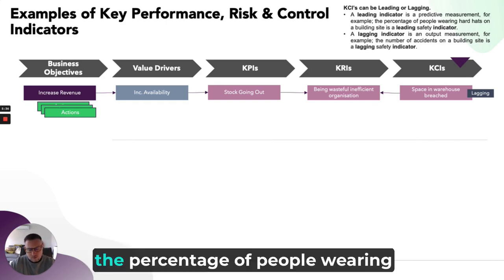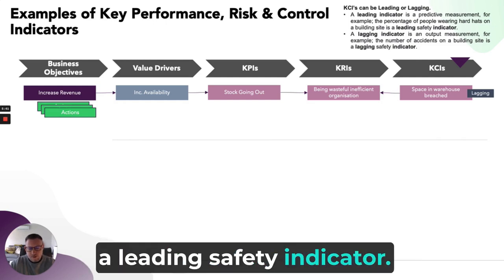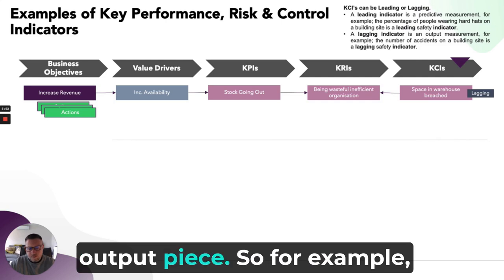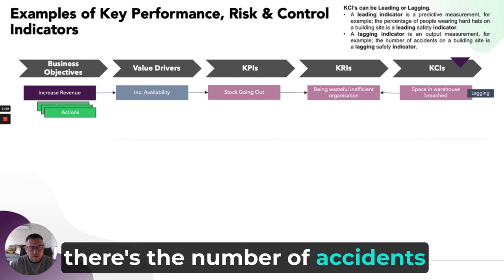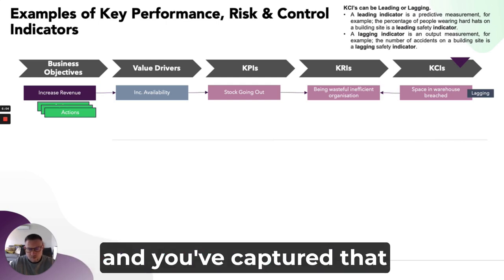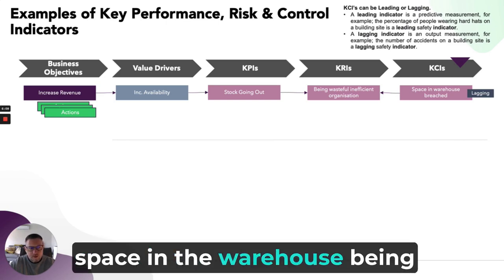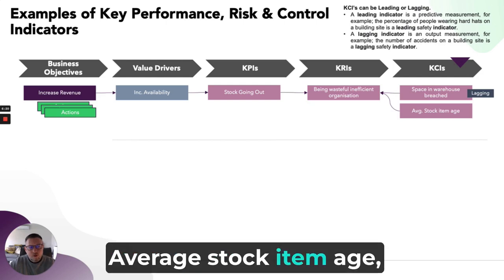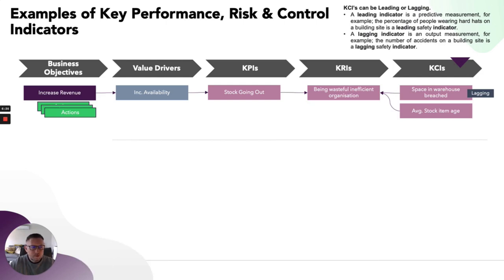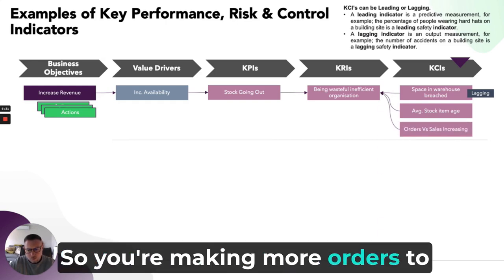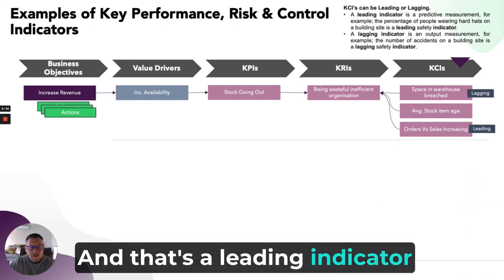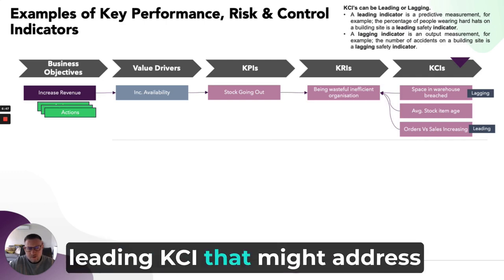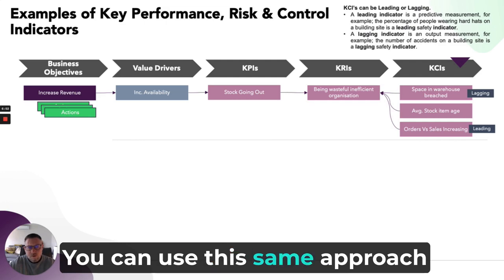A leading indicator is a predictive measurement. For example, the percentage of people wearing hard hats on a building site is a leading safety indicator — it shows people are protected against head injuries. The lagging indicator is the output: how many accidents have occurred on the building site. So space in warehouse being breached is lagging — the problem has already happened. Average stock item age — stuff sitting on the shelf a long time — could also be a Key Control Indicator, as could orders versus sales increasing. If your ordering is outweighing your selling and you don't have foresight of a big incoming order, that's a leading indicator of the risk of being wasteful and inefficient.